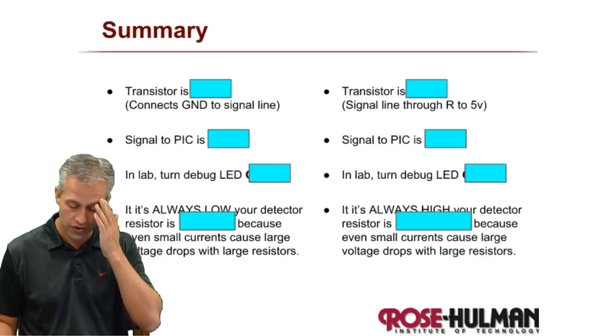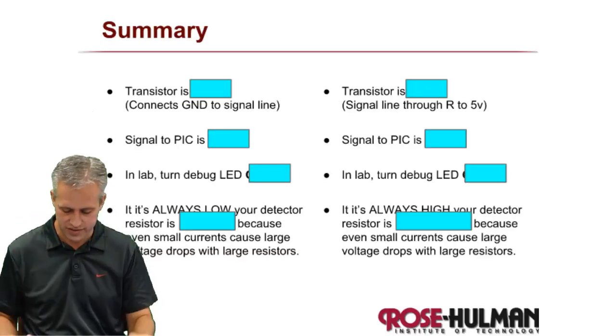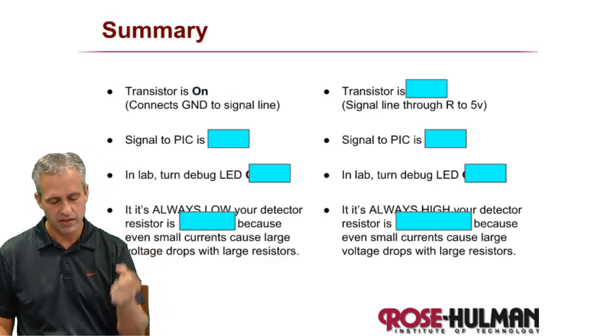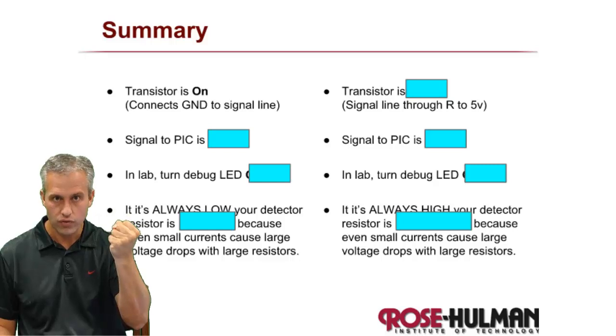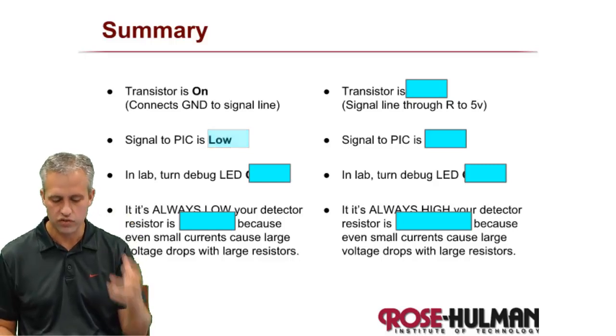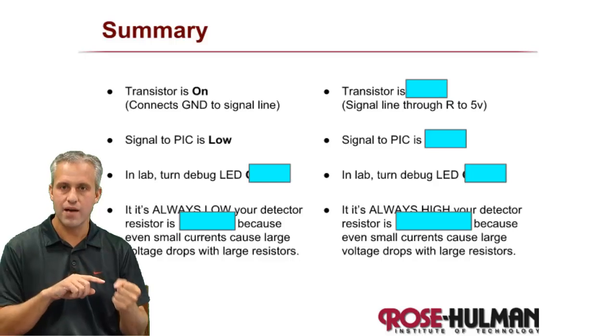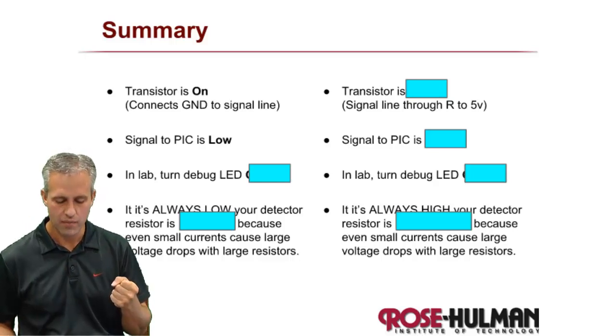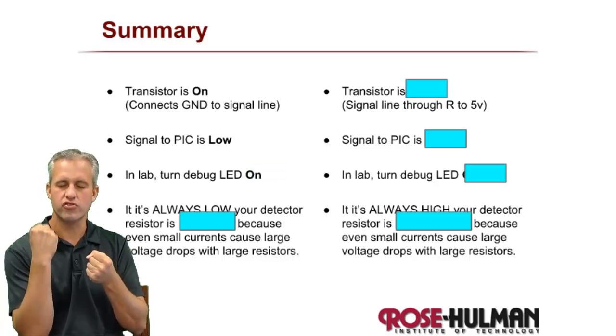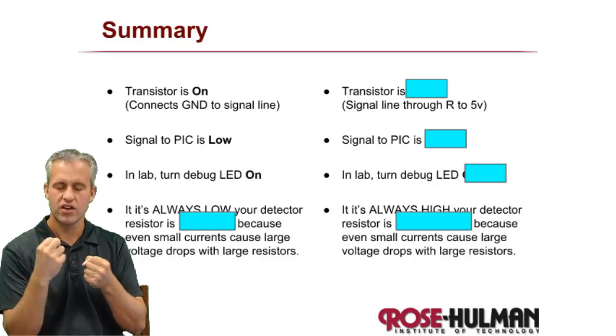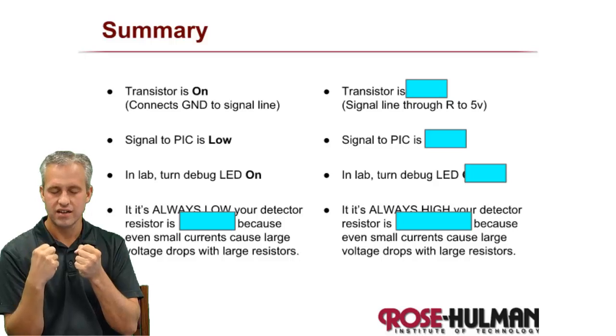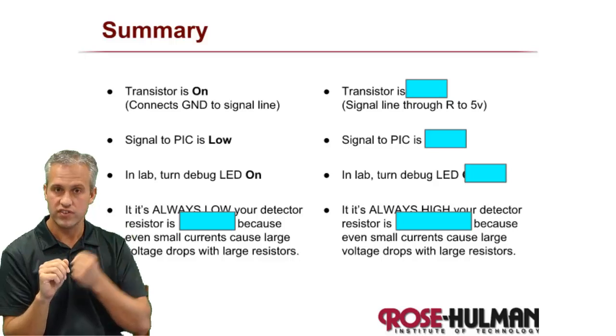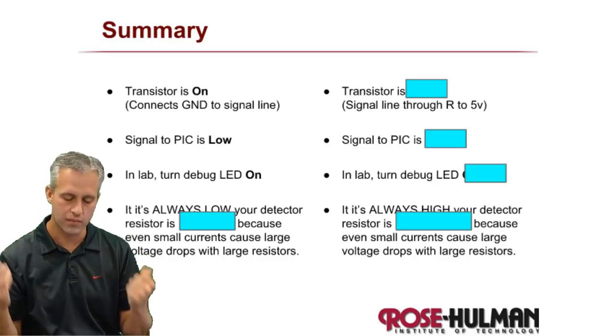So just to kind of summarize this for you, I know it gets so complex. So if the transistor is on, it basically connects the signal line to ground. So that means the signal to the PIC is low. In lab, you're going to have a debugging LED for what the signal reads. The debugging LED, by the way, it'll show whether it's seeing light or not. So if it's seeing light, it's going to turn the LED on the debug LED. So if it's seeing light, it shows a light. That makes sense.